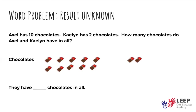We are going to use this problem to show the strategies counting all, counting on, and decomposing one or both numbers to find a friendly number. Here's our problem — it is a result unknown: Axel has 10 chocolates, Calyn has two chocolates. How many chocolates do Axel and Calyn have in all? Before we start, we must identify the numbers to create our equation. On assignments, especially on Seesaw, you'll see vocabulary assistance — pictures next to words — to help students learning the language build vocabulary and solve the word problem.